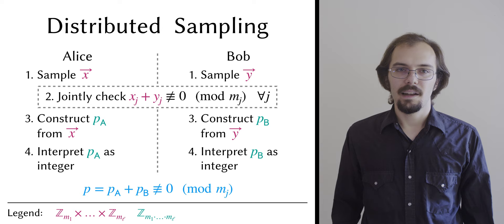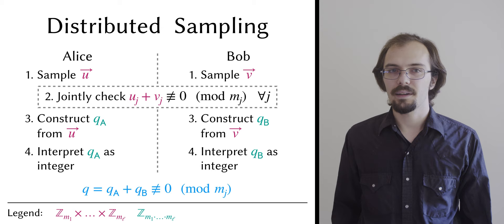We show that if they do this, then the integer sum of their shares of p will be indivisible by all of the primes in the primordial vector. And of course, they can repeat the process to sample q. The integer shares here are important, by the way. We need them for compatibility with the Bonet-Franklin test, which we're going to run later.